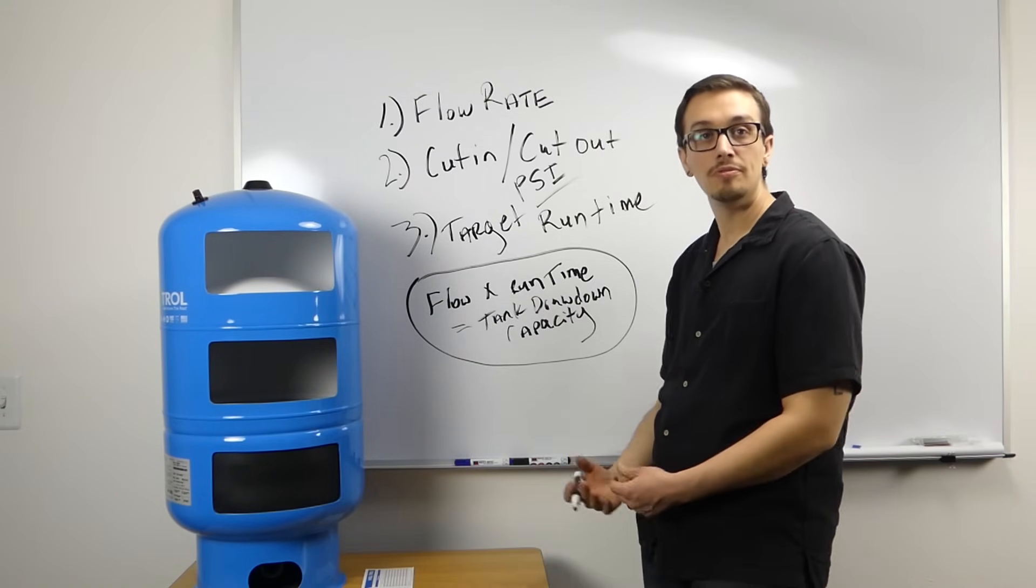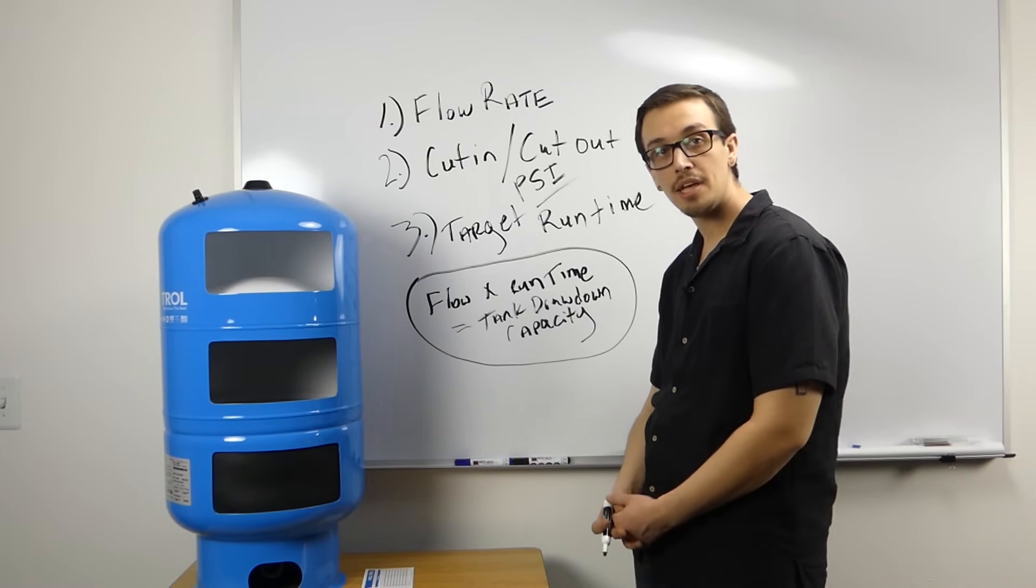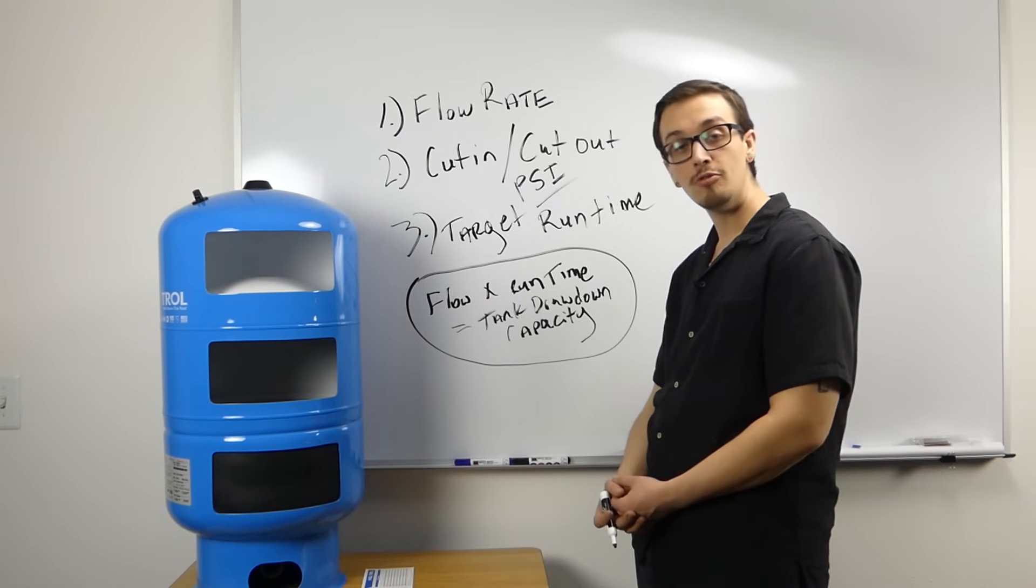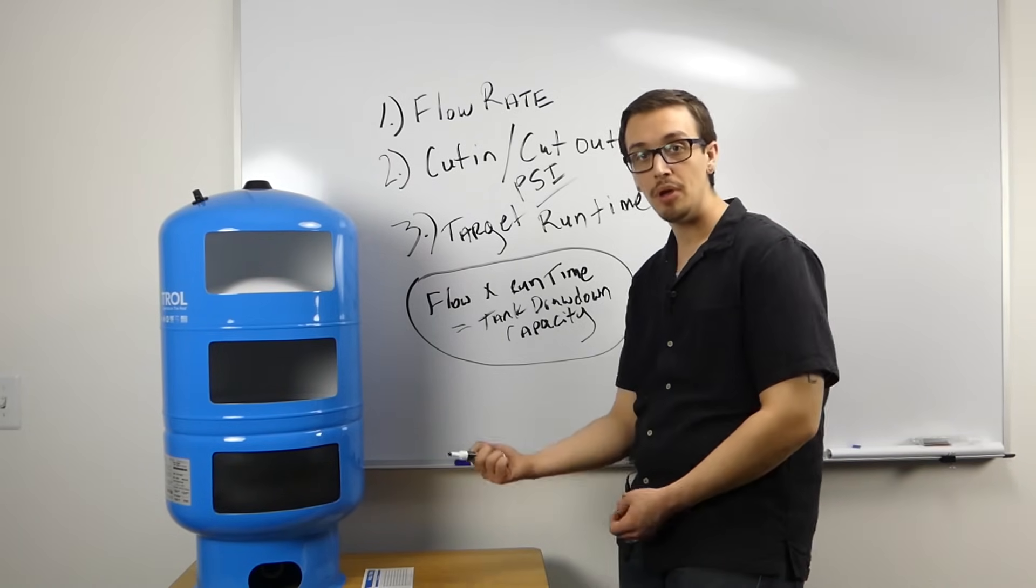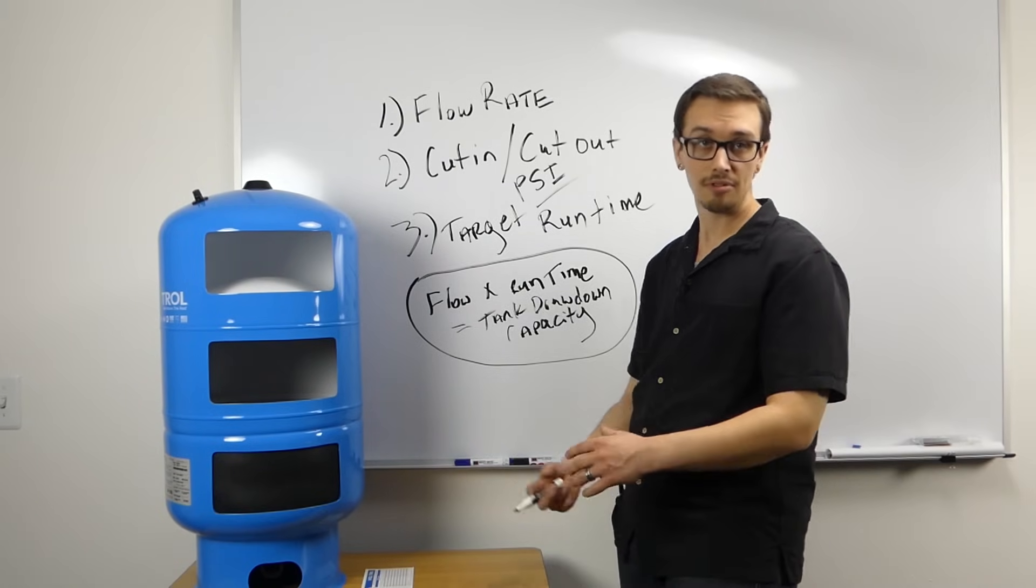Pumps with flow rates or capacities up to 10 gallons per minute should have a tank with a minimum of one gallon drawdown capacity for each gallon per minute of the pump. For example, a 10 gallon per minute pump would want to have roughly a 10 gallon drawdown capacity.